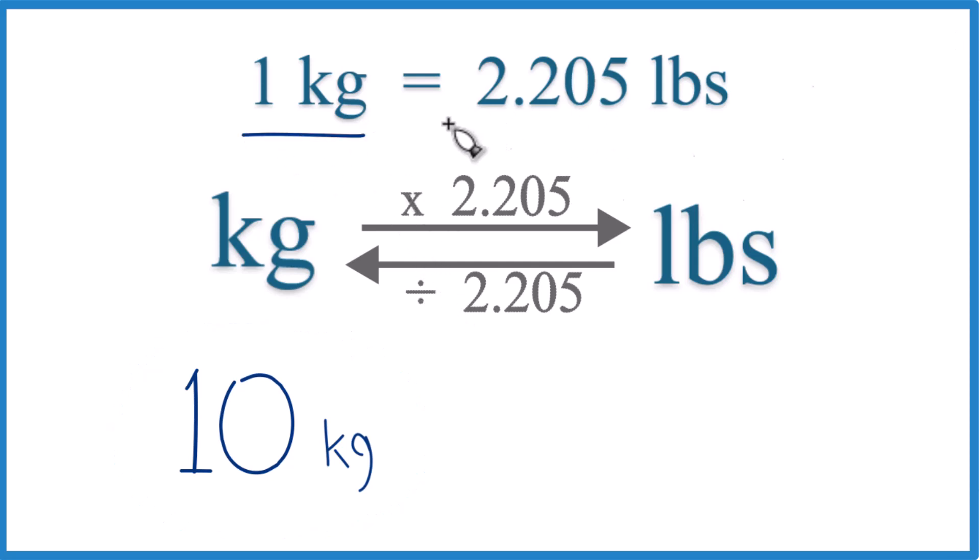One kilogram equals 2.205 pounds. We call this a conversion factor, and you need it to convert from kilograms to pounds or pounds to kilograms.